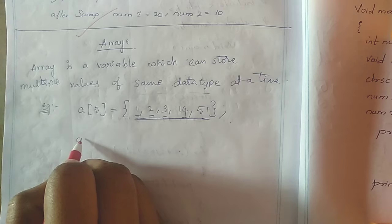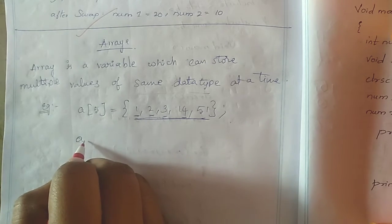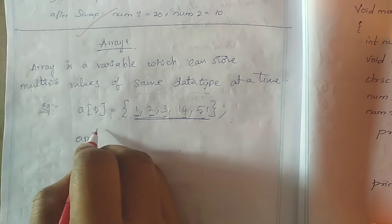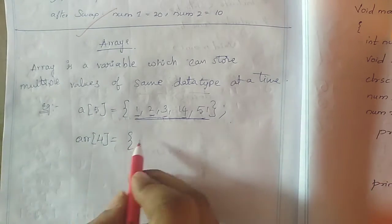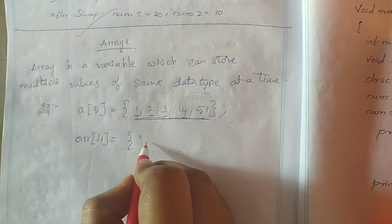Next, here I am taking another example, that is ARRR. It is also an array. It is having 4 elements.